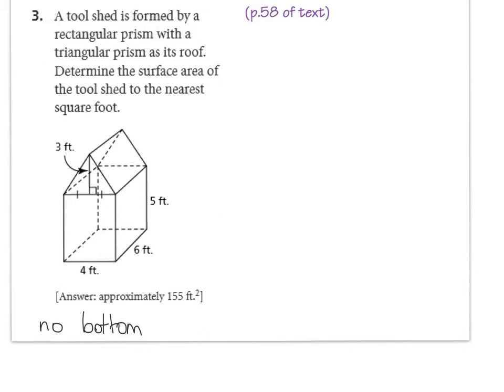So let's take a look at our game plan. To begin with, we're going to have two rectangles that represent the sides of this tool shed. These rectangles will be six feet wide and five feet tall. We can find their total area now. Okay, that's pretty easy.